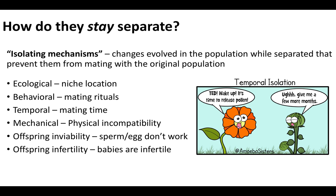The last two isolating mechanisms involve offspring. Offspring inviability is when the sperm and egg don't fuse properly, or they do fuse but the fetus dies. Offspring infertility is when you can produce babies but the babies aren't fertile. A great example: a horse and a donkey can have babies — a mule — but the mule itself is infertile and sterile. So donkeys and horses are reproductively isolated because even though they can produce a hybrid, that hybrid cannot continue the lineage down multiple generations.